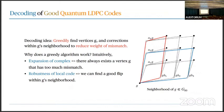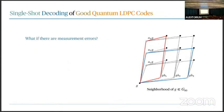Using these two key properties of quantum Tanner codes — and asymptotically good codes in general — we can run this greedy decoding algorithm so that at the end we have a valid correction and can correct linear-weight errors. But this talk is really about single shot decoding. What if there are measurement errors? How can we do this decoding procedure when syndromes could be wrong?